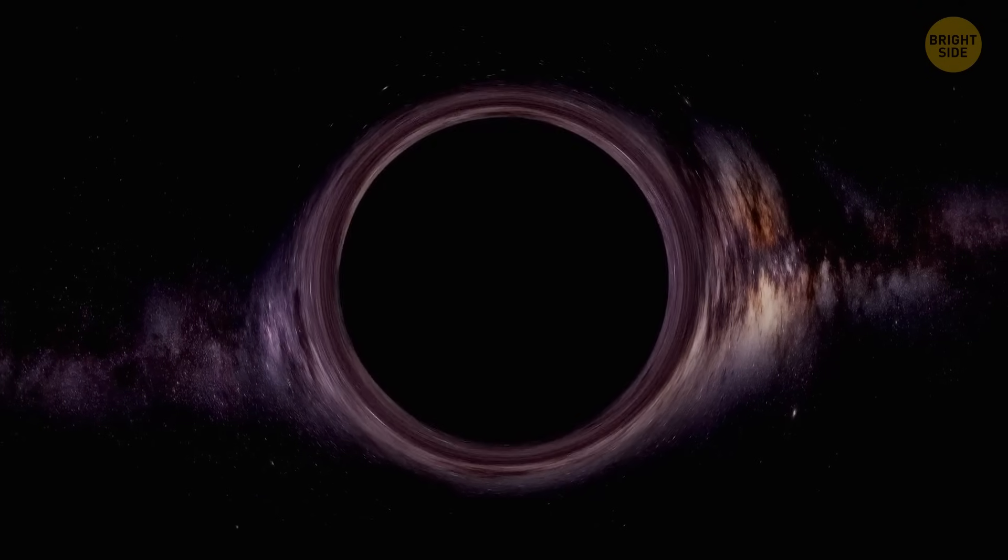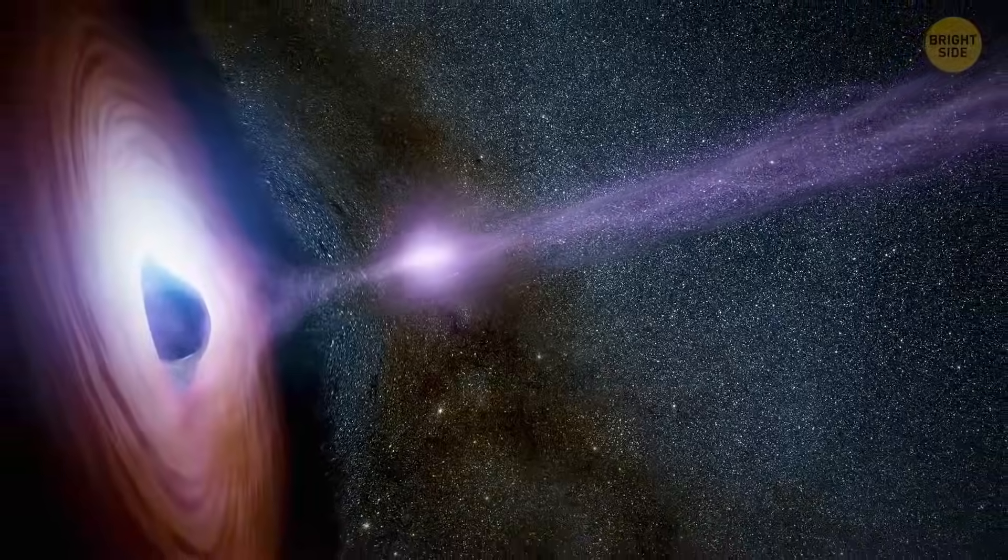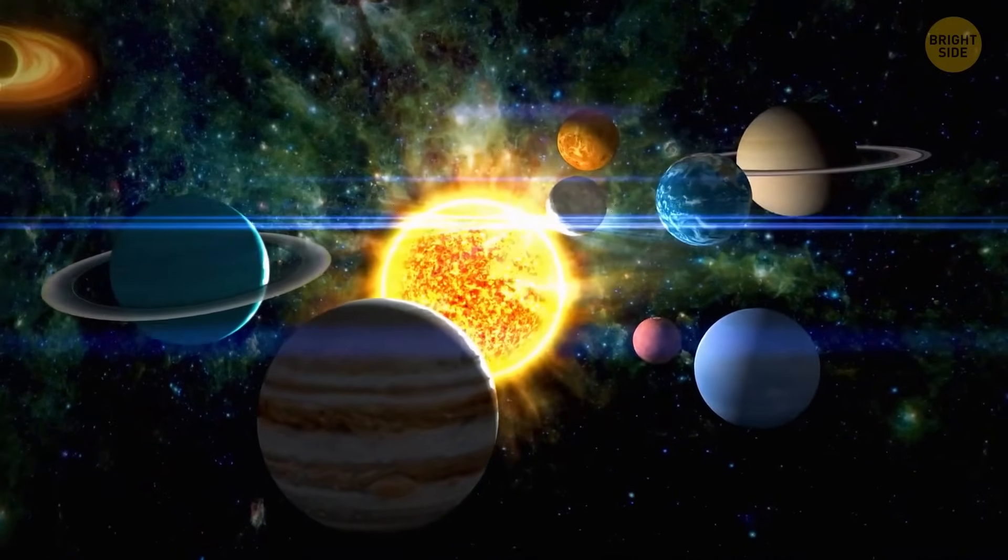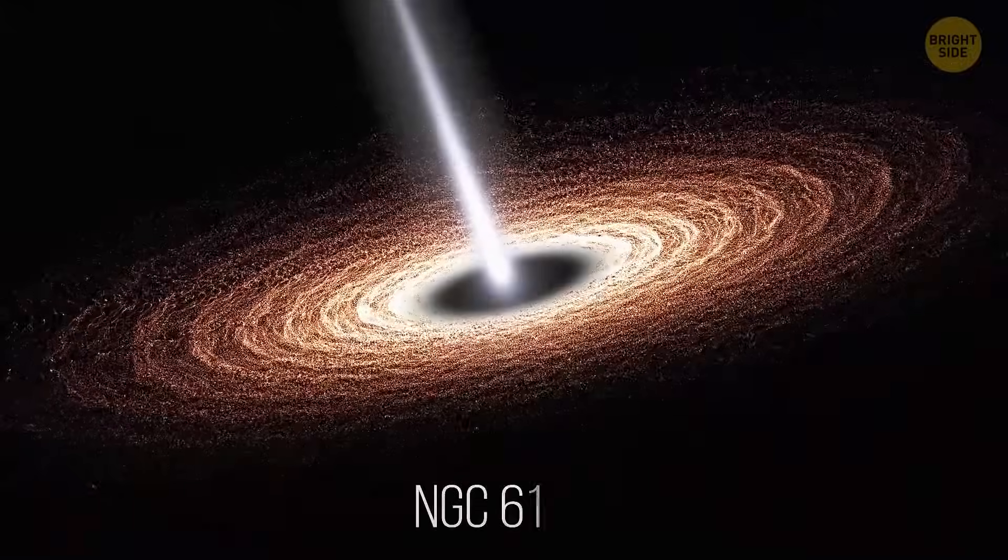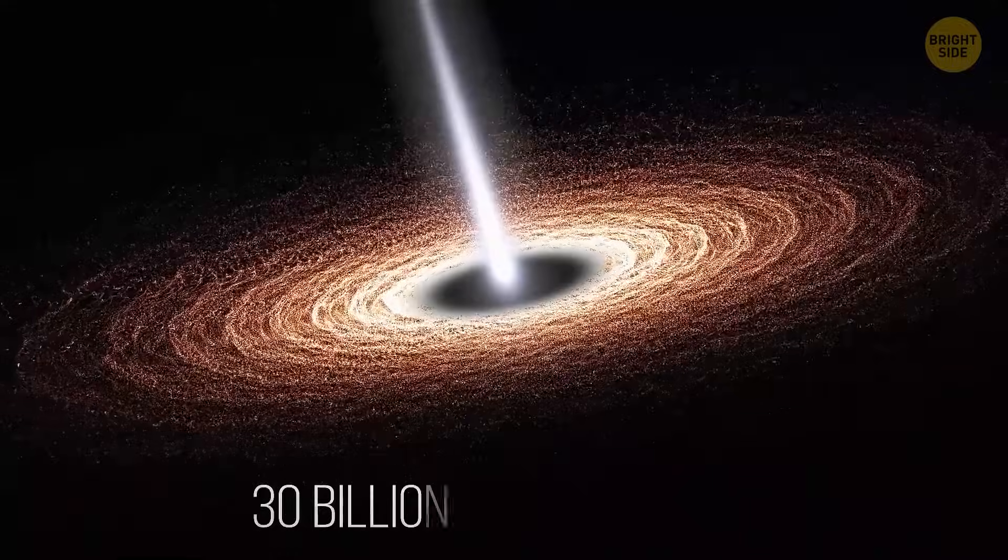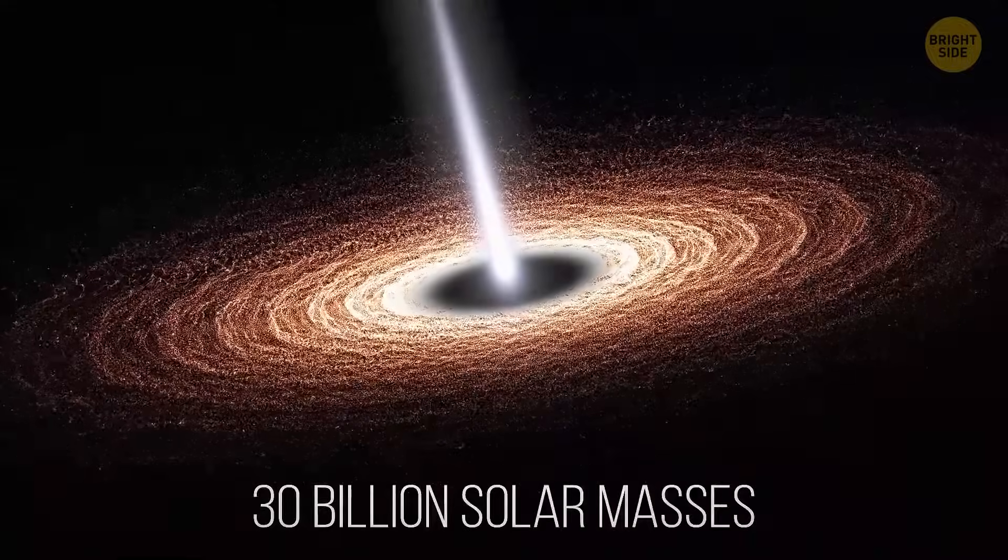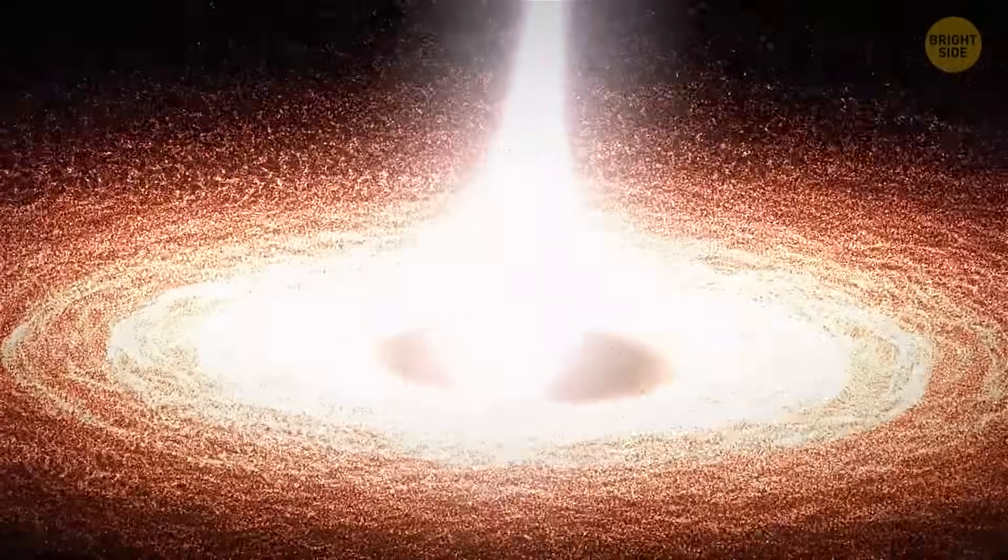Now, how about having a look at the biggest black holes astronomers have found so far, and finding out what would happen to Earth if one of them was to enter the solar system? NGC 6166 is a monster that has grown to have a mass of 30 billion solar masses. It's an elliptical galaxy that has an active nucleus at the center.